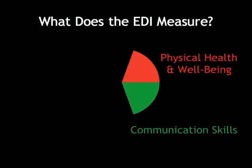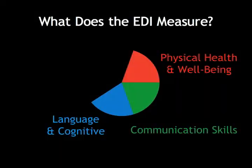Next, we have a scale on communication skills that has to do with whether or not the children understand what's going on in the classroom and can make themselves understood in the classroom. Third is the language and cognitive scale, which deals with whether or not the kids have some number facts and some letter facts, and whether they seem to be familiar with picture books and things like that that they should have been exposed to by the time they reach school age.